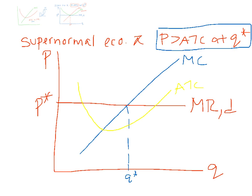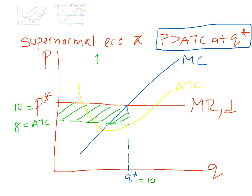This firm is now going to be making a profit equal to the area of the rectangle. Because at Q-star, ATC is less than P-star. For example, P-star could be $10, ATC could be $8, and Q could be 10 units. Then the super normal profit will simply be equal to (10 minus 8) times 10 — that's 2 times 10 — $20. The average total cost curve is below your price at Q-star, so you're making a profit.